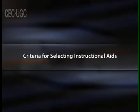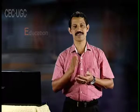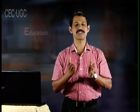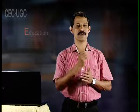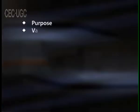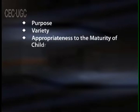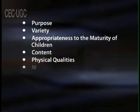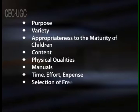What are the criteria for selecting instructional aids? Some criteria are necessary for the selection of instructional aids in social studies teaching. They are purpose, variety, appropriateness to the maturity of children, content, physical qualities, manuals, time, effort, expense and selection of free or inexpensive materials.